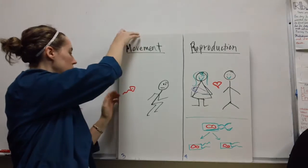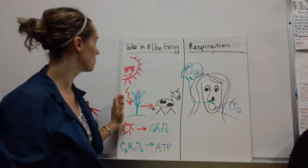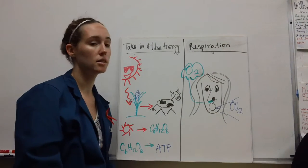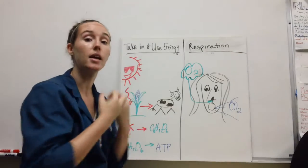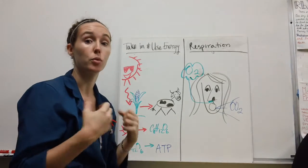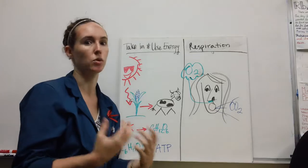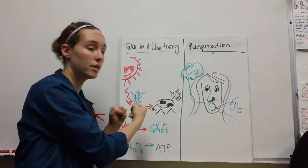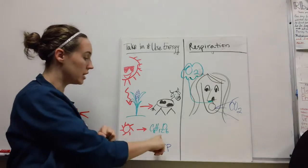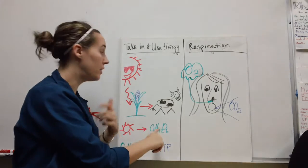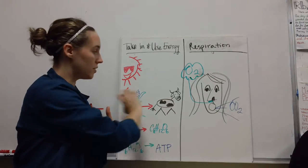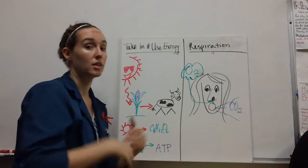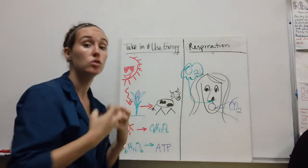Next, all living things take in and use glucose energy. If you're a producer like a plant or algae, the energy you're taking in is from the sun, and they turn it from light energy into glucose.